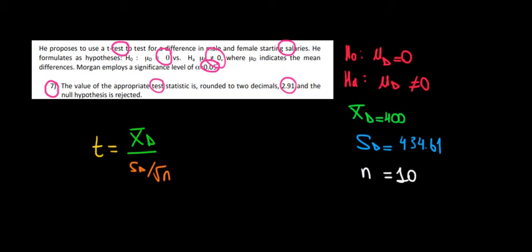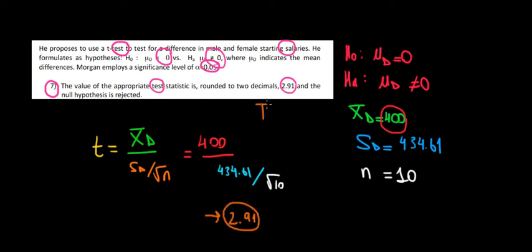Now let's substitute the values to see what we get as a result. We're going to have 400, that's the sample mean of the differences, 400 over 434.61. So let's write 434.61 over square root of 10. So we're going to divide that by square root of 10. Now if we solve the math we would get a t-value equals to 2.91. So the answer key to this question is true and we are done.